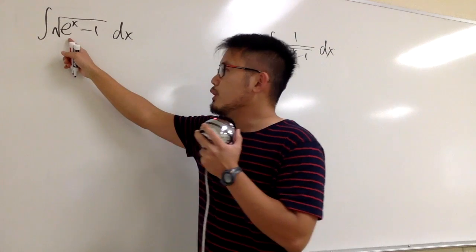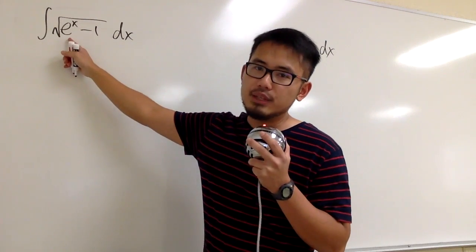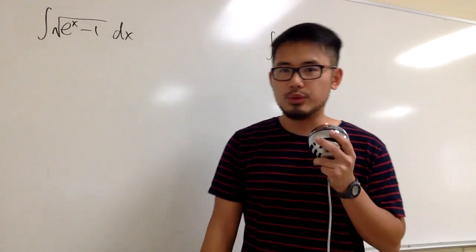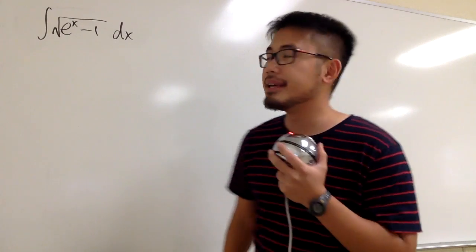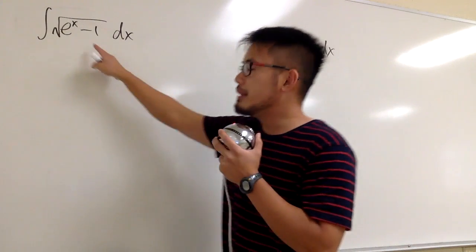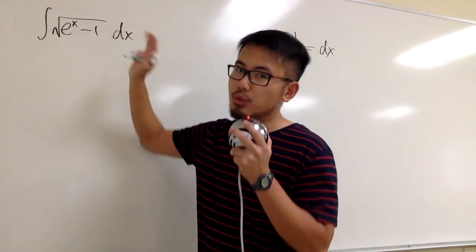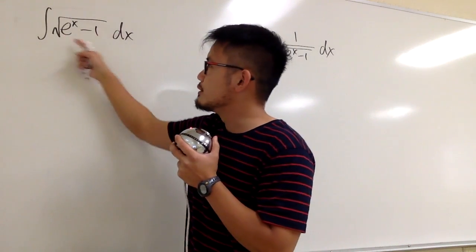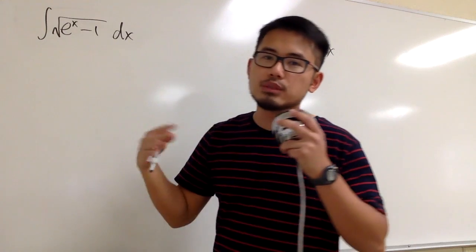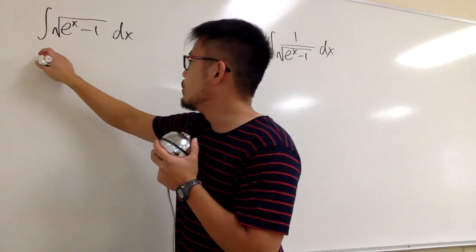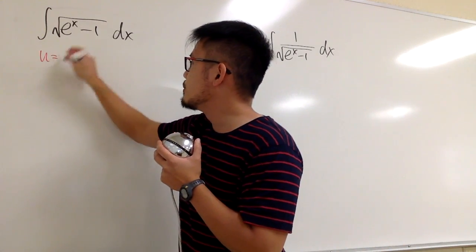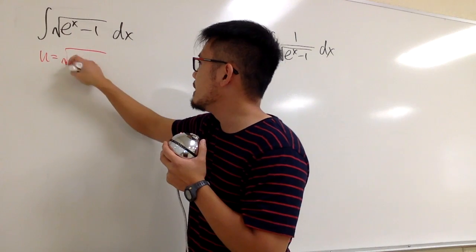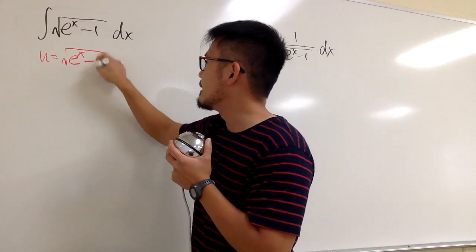First, you can let u equal to the inside, e to the x minus 1, but in that case you have to do the substitution twice. It will be easier if you let u equal to the whole thing. Let u equal to the square root of e to the x minus 1.